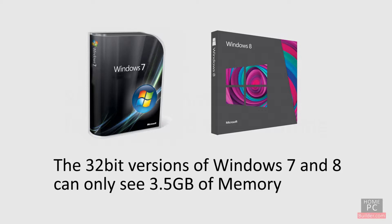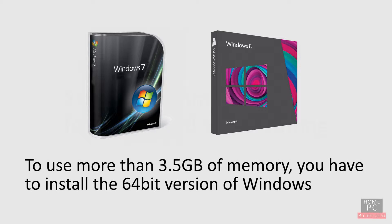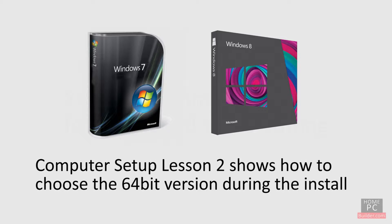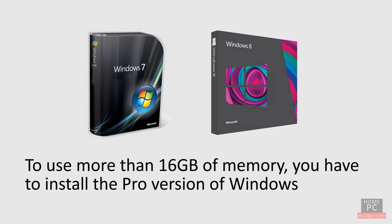The 32-bit versions of Windows 7 and Windows 8 can only see 3.5GB of RAM. For this reason, you will need to install the 64-bit version of Windows. See Lesson 2 of the Computer Setup Lessons for choosing the 64-bit version of Windows. If you are installing more than 16GB of RAM, you will need to get the Pro version or above of Windows, as Home or regular versions are limited to 16GB of RAM.